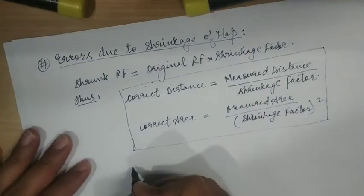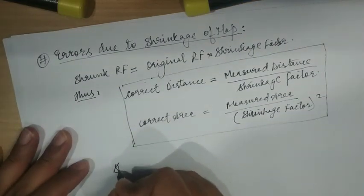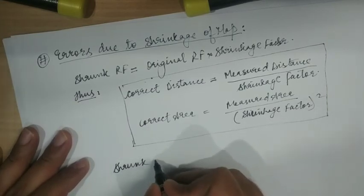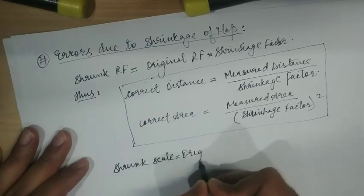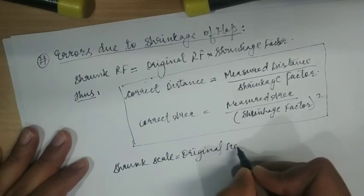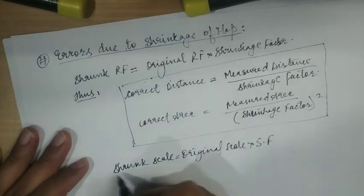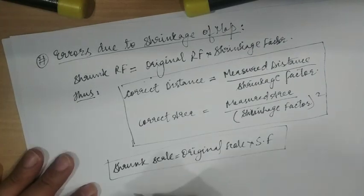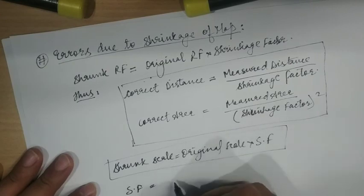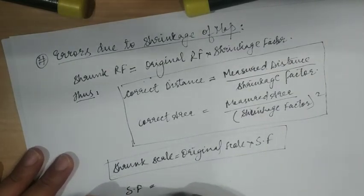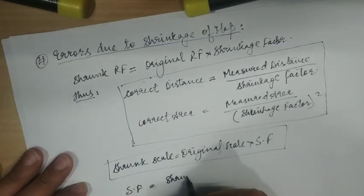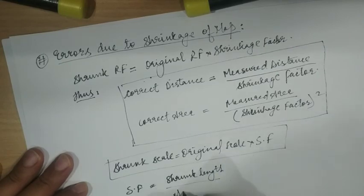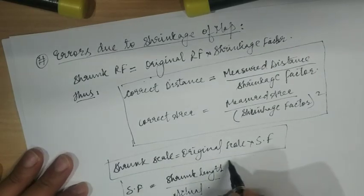The actual formula is: shrunk scale = original scale × shrinkage factor. The shrinkage factor (or shrinkage ratio) is defined as the ratio of the shrunk length to the actual length. This is the definition of the shrinkage factor.